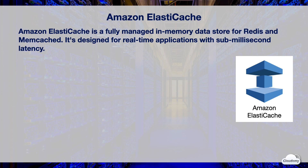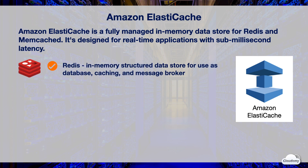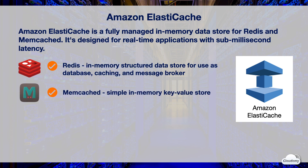ElastiCache offers two datastore options. Redis is the in-memory datastore for complex structured data, web caching, and message brokering. Memcached is the simple in-memory key-value store for simple caching.